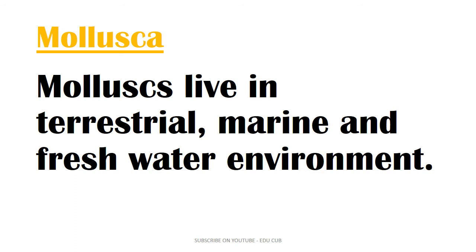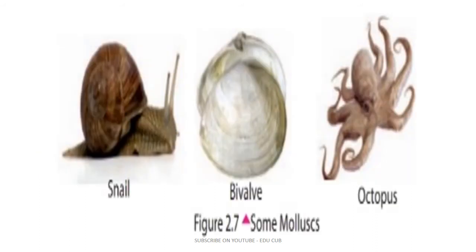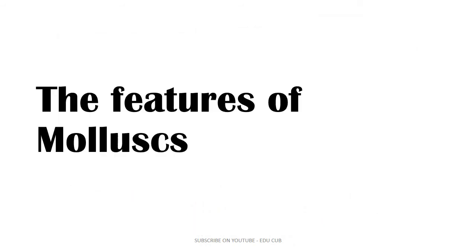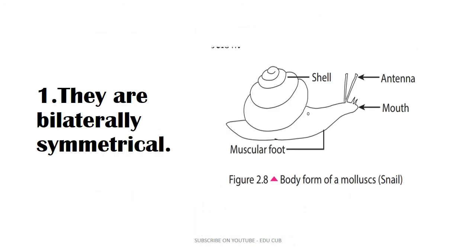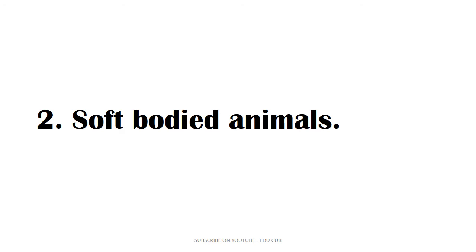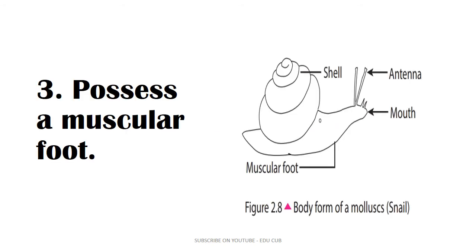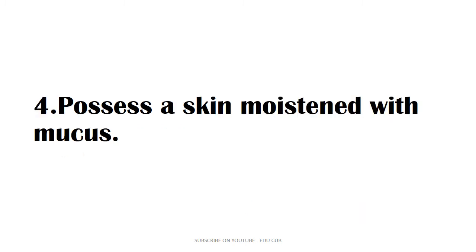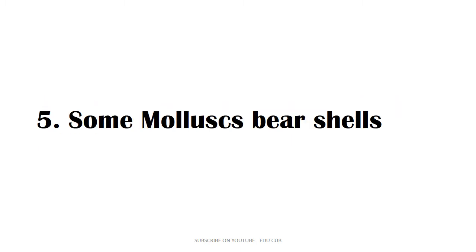The next group is Mollusca. Mollusca live in terrestrial, marine, and freshwater environments. Examples include: snail, bivalve, and octopus. The features of Mollusca are: they are bilaterally symmetrical, soft-bodied animals that possess a muscular foot and a skin moistened with mucus. Some Mollusca bear shells.